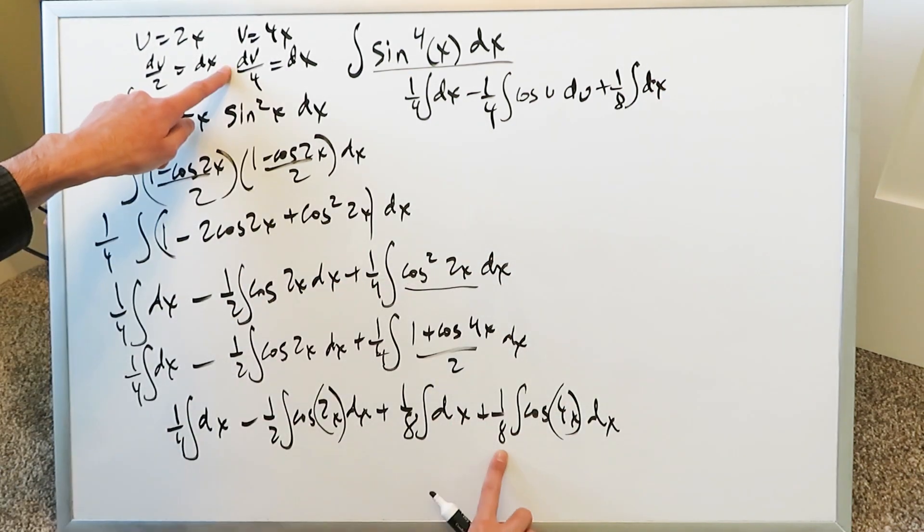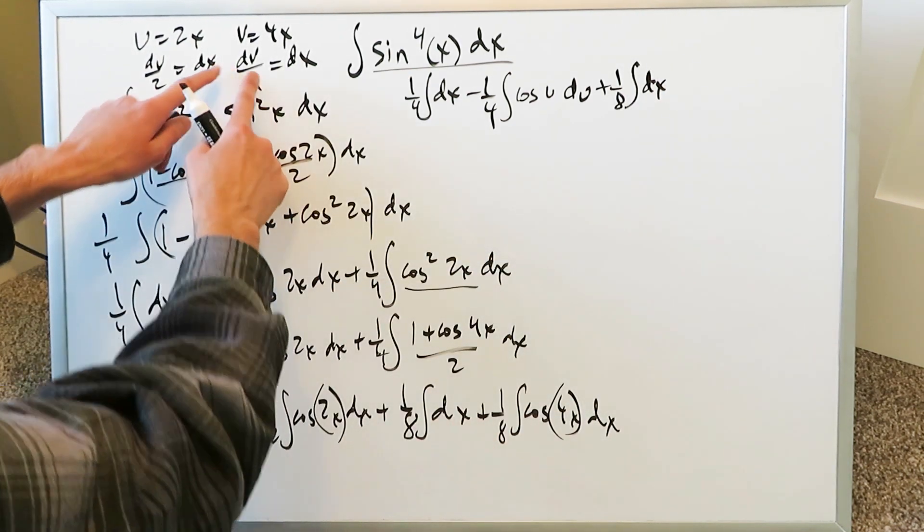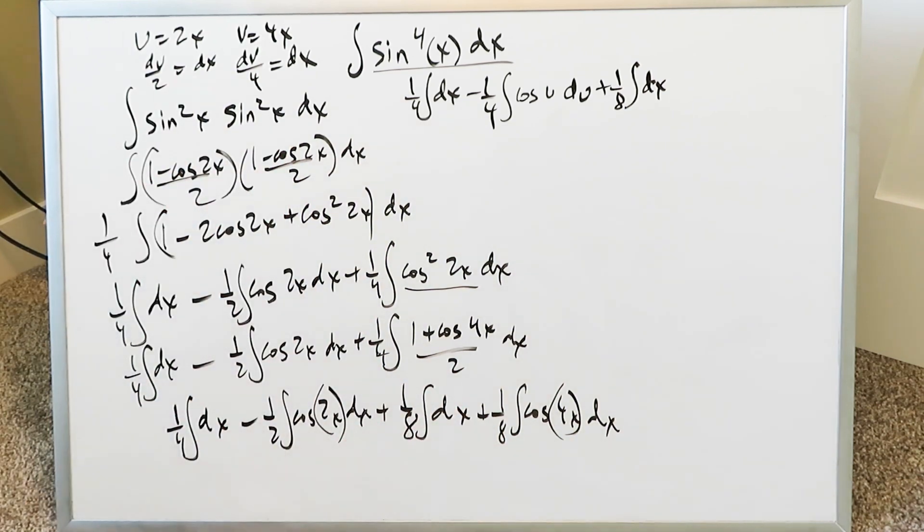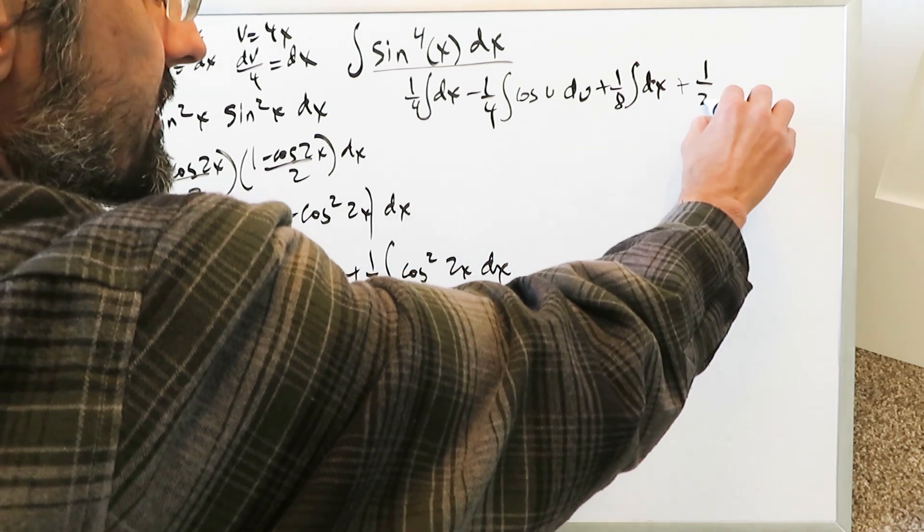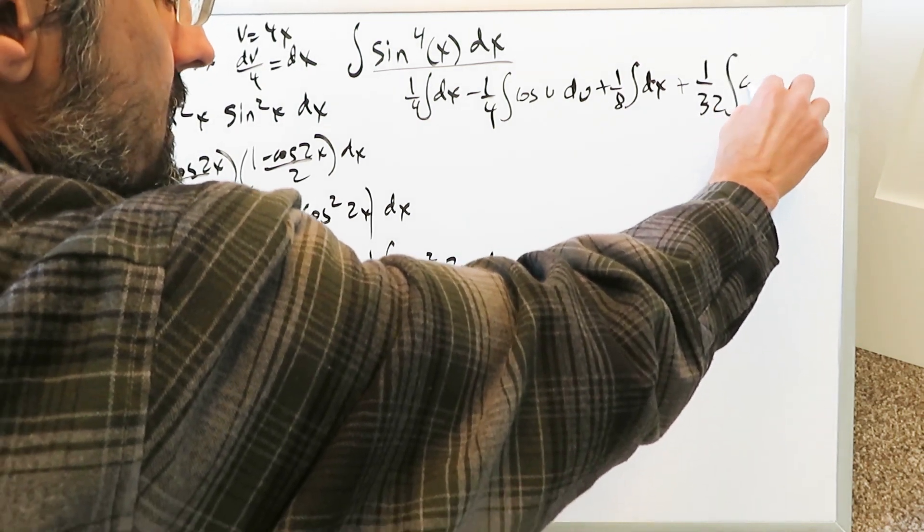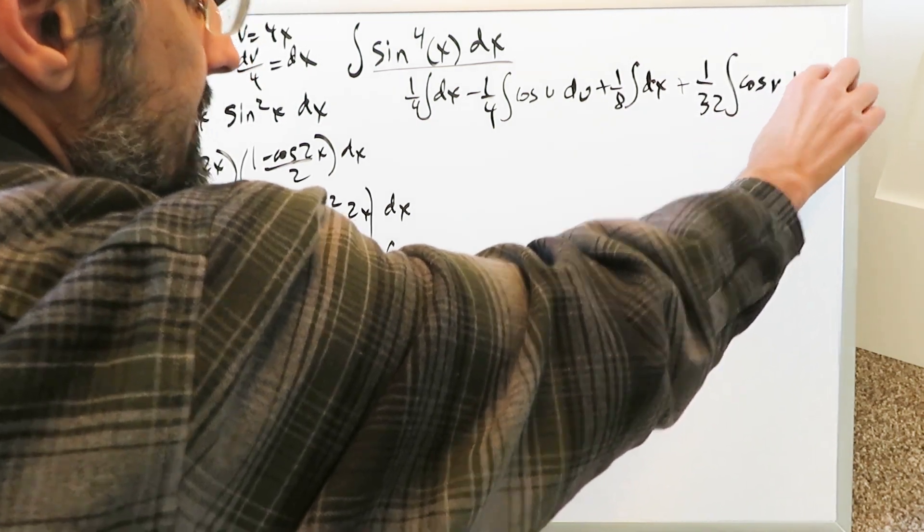Here you'll have a 32. 1 over 32 coming from right here. Denominator 4. 1 over 4 times 1 over 8. 1 over 32. It can get a little messy but it makes sense at the end. 1 over 32 integral cosine v dv.